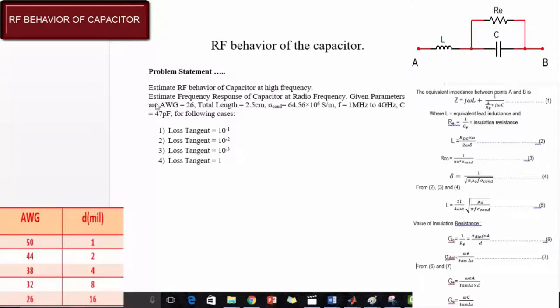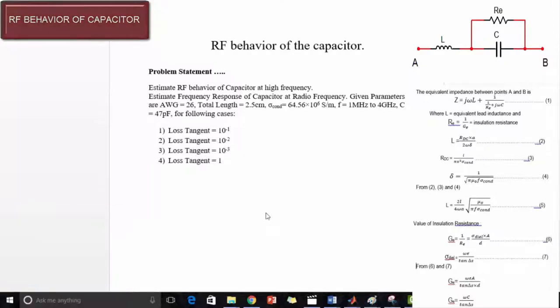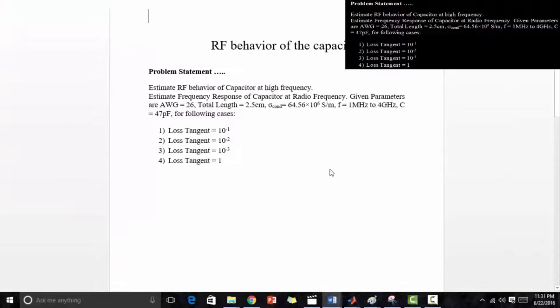As we have already seen in our previous experiment on resistor, the meaning of AWG and how it is calculated. This table here will show you the value of AWG for 26 and the value of diameter for 26 AWG. Let's look into the MATLAB program for this.